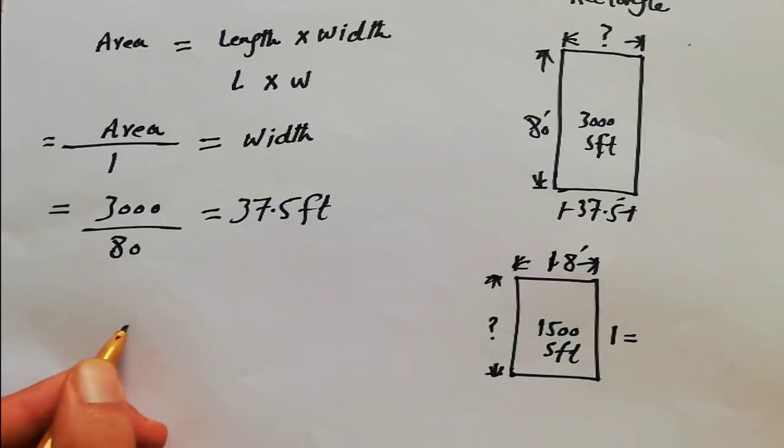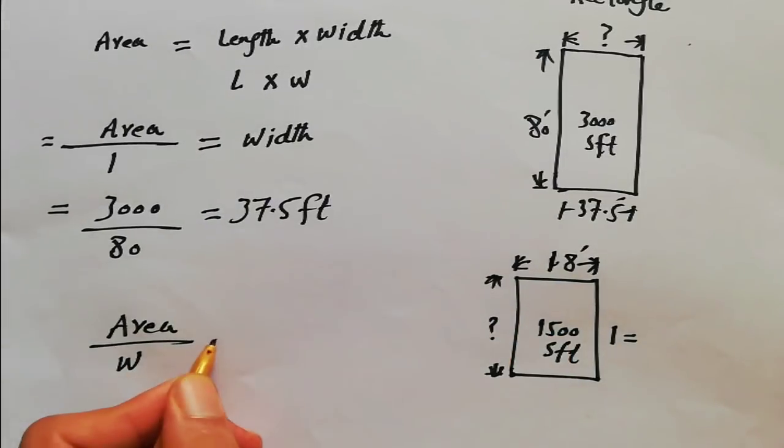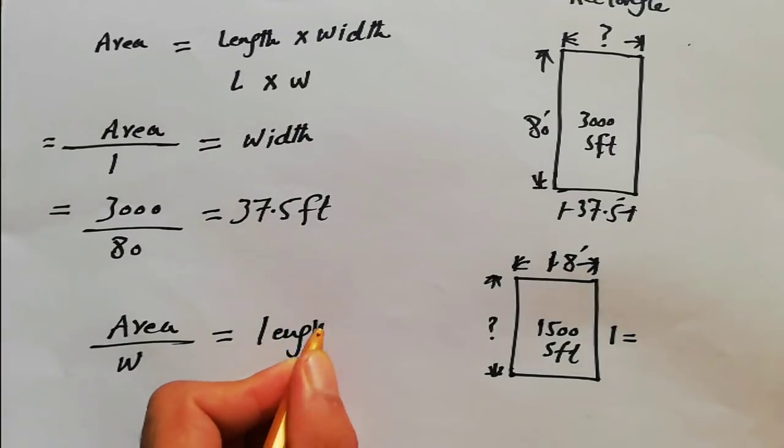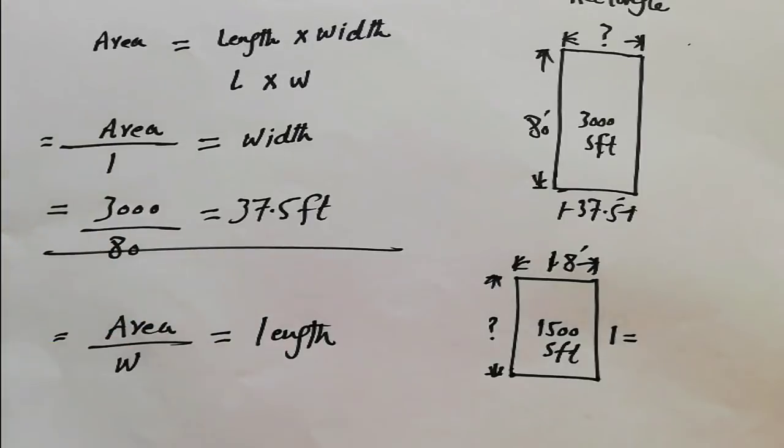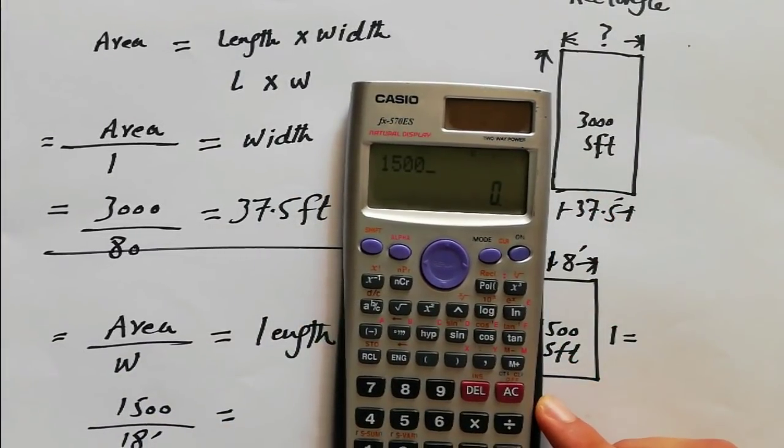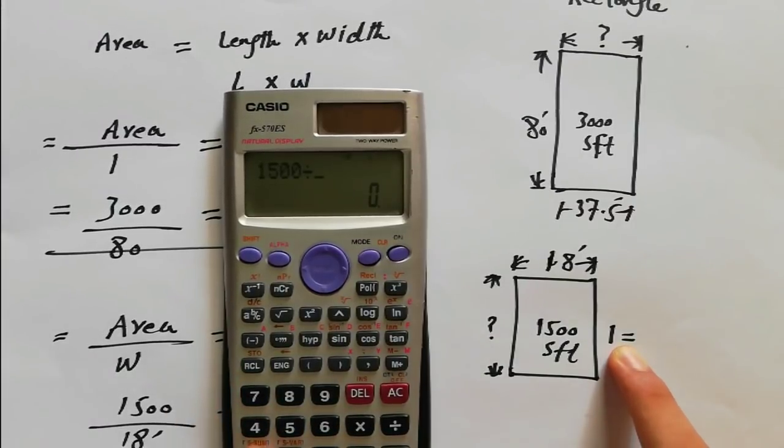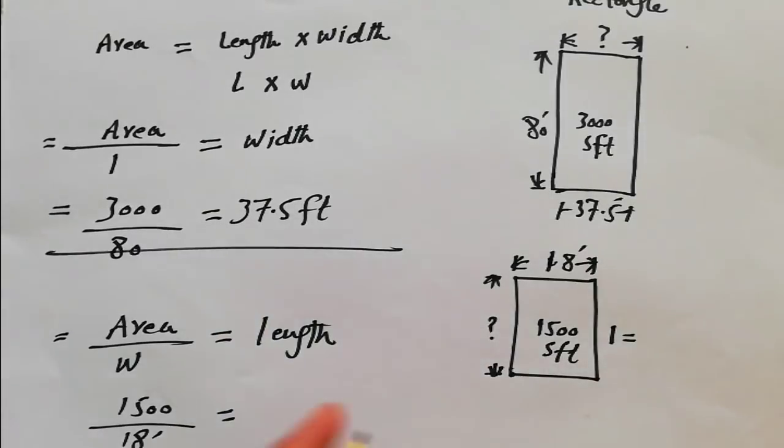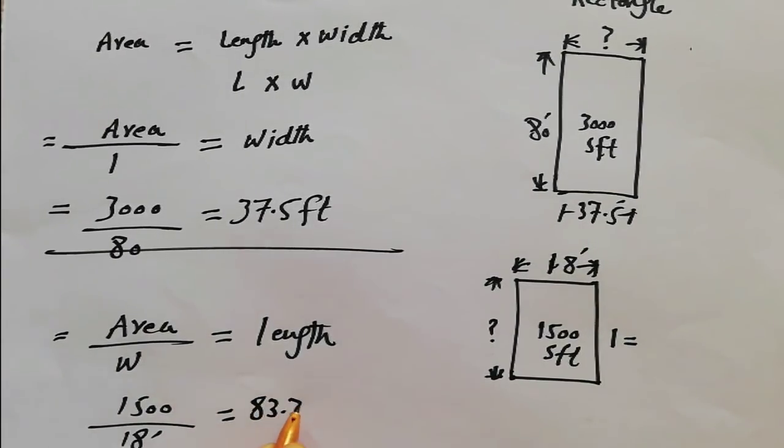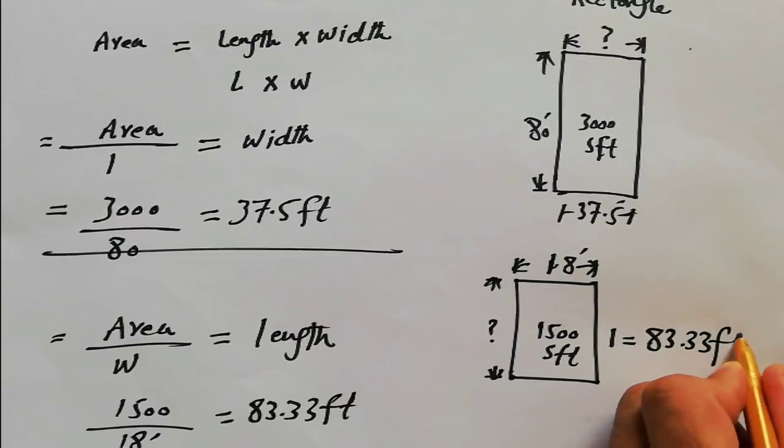Same formula: area divided by width will give us length. Here area is 1500 divided by width, which is 18 feet. Use calculator for calculation: 1500 square feet divided by 18 feet, which gives us 83.33 feet. So this side is 83.33 feet.